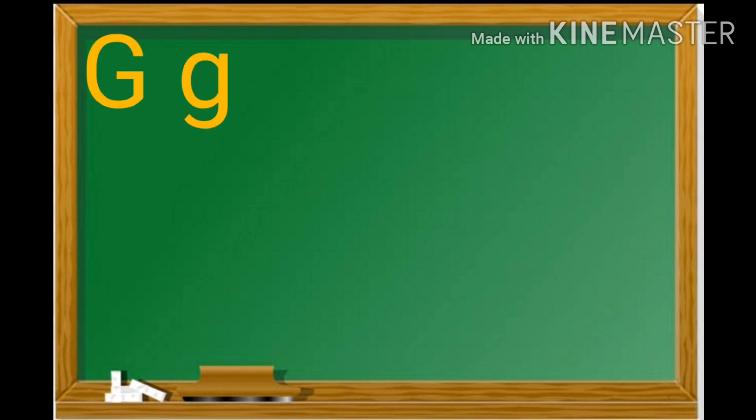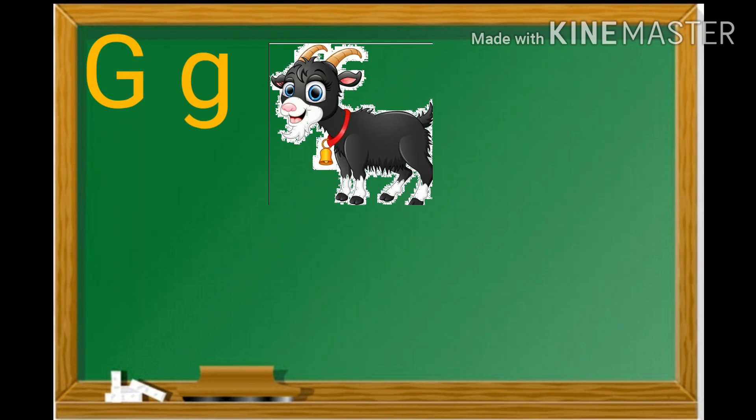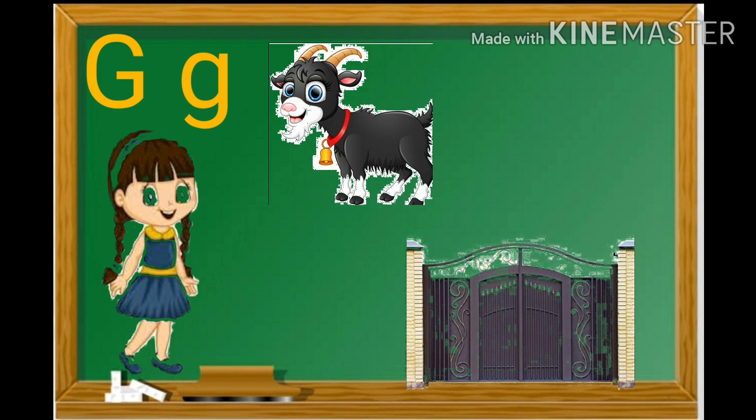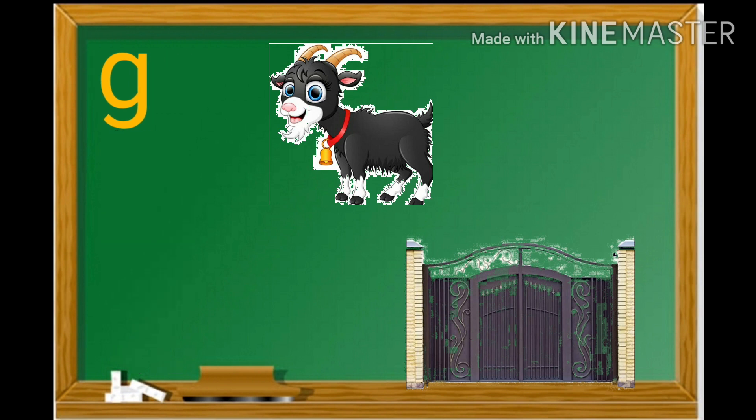Our next letter is G. Mama G and Baby G. Sound of G is G. Say with me. G. Goat. G. Gate. G. Girl.